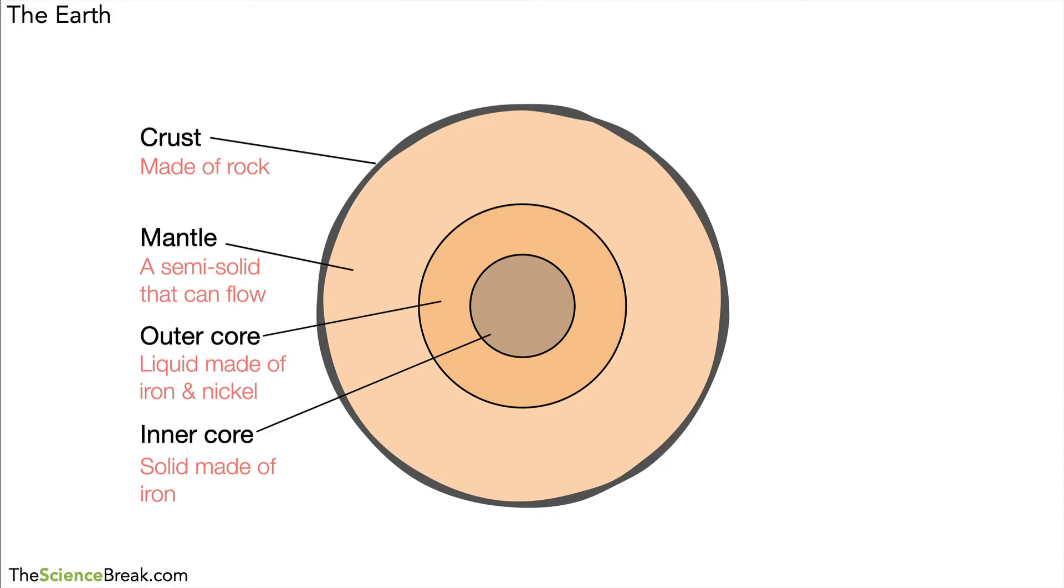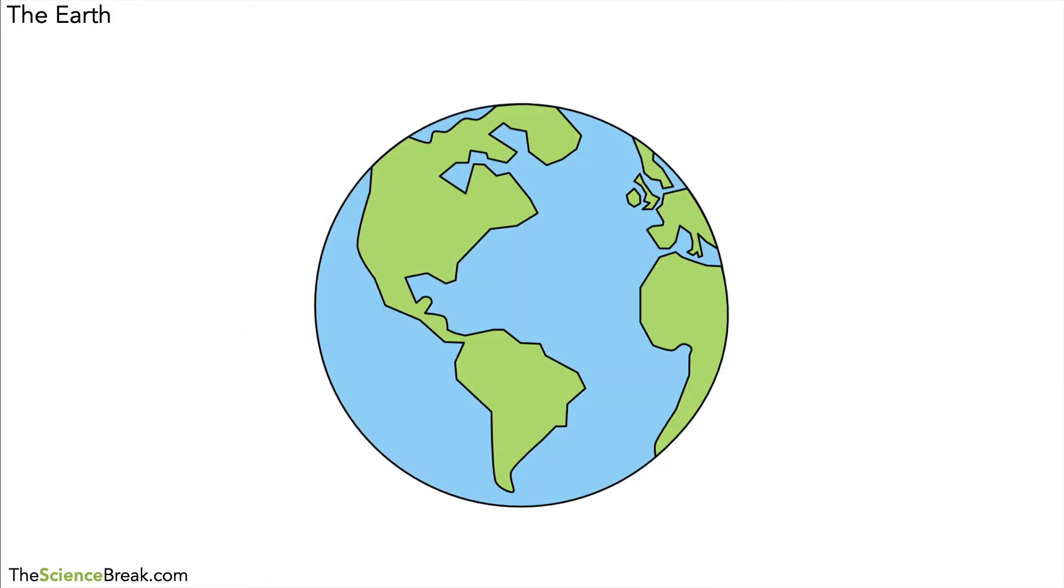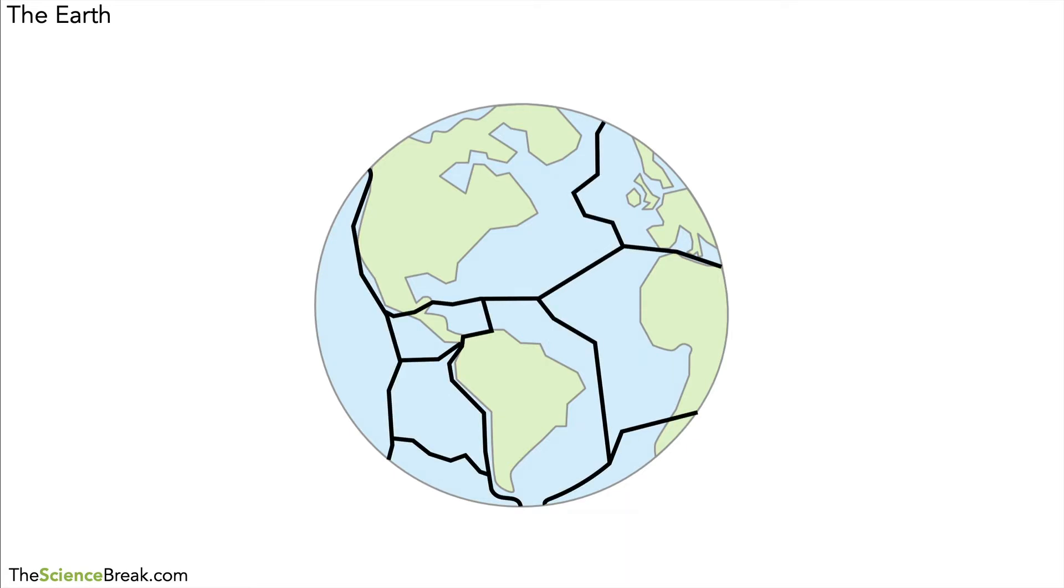The next thing we can look at, briefly, is information about the crust. So here's the surface of the planet. If we just take a look, if we take away all the water and looked at the crust, we would see it's broken up into separate parts.